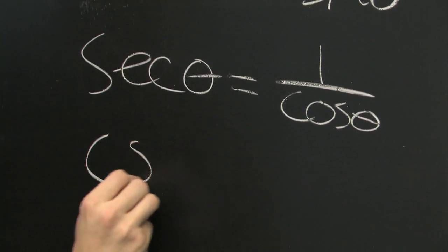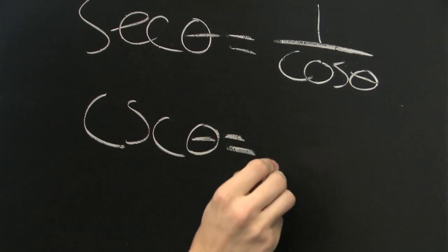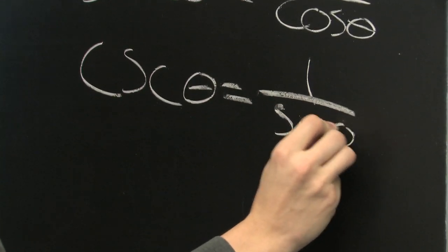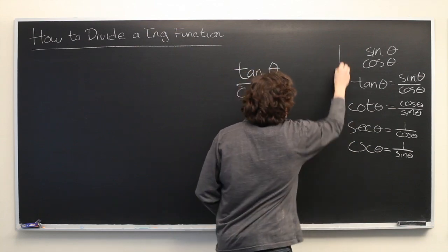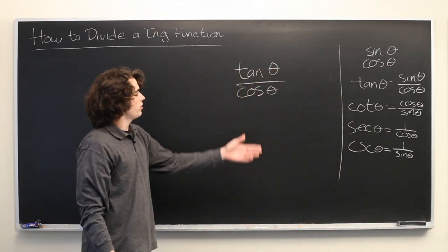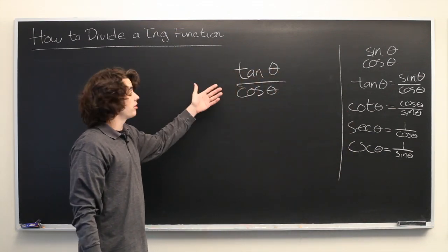And finally, we have cosecant, which is equal to 1 over sine. Well, using these definitions, we can manipulate this any way we want to.